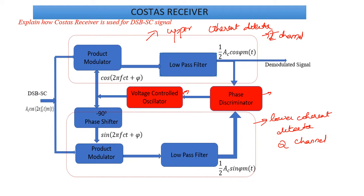It is a demodulator circuit, so you are going to reconstruct your original signal back — that is your low frequency M(t) as your output. The input to your demodulator is your modulated signal, which is nothing but your DSB-SC signal. S(t) is equal to M(t) into C(t), giving AC·cos(2πf_c·t)·M(t). This DSB-SC signal is given as input to both product modulator 1 and product modulator 2.